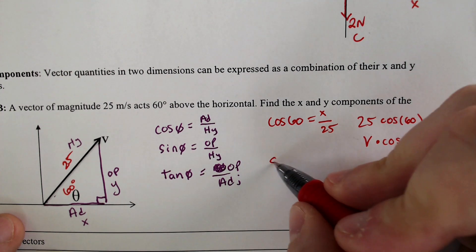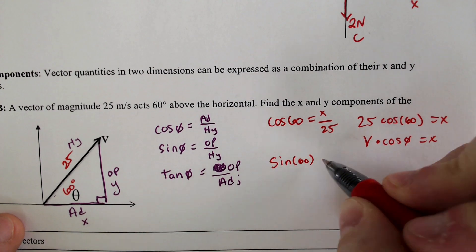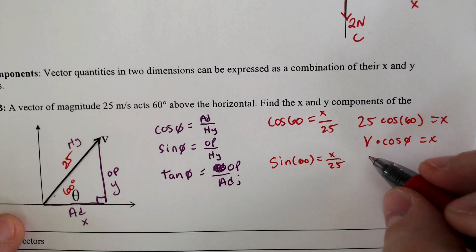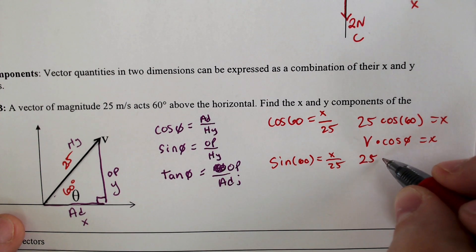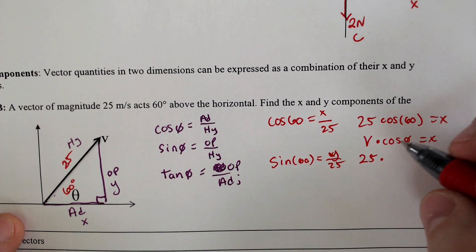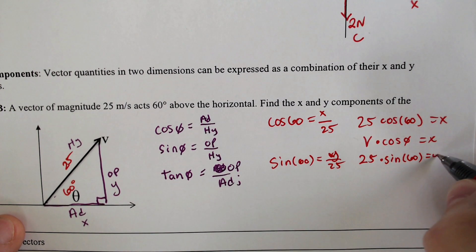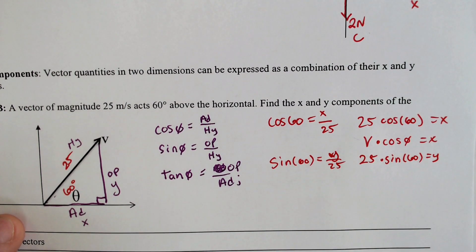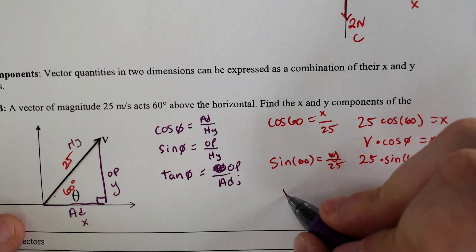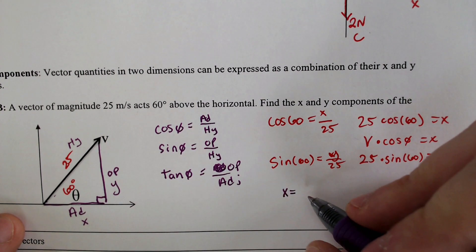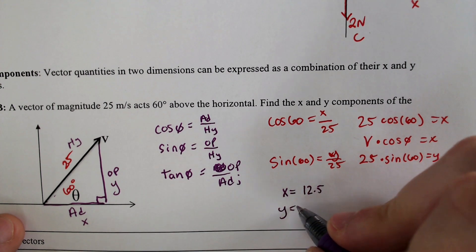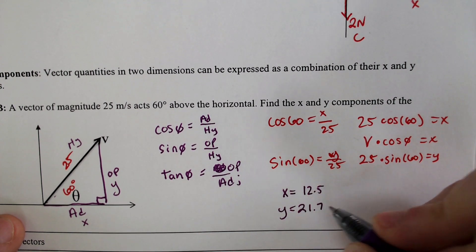The sine of that same angle, 60, would equal x over 25, which means we would also multiply by 25 to get 25 times sine of 60, would give us our y component. And if we do the math for both of those, we'll find out that the x component is equal to 12.5, and the y component is equal to 21.7.